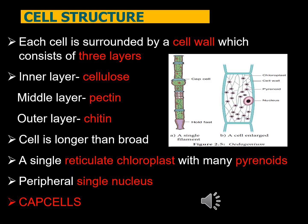Cell structure of Oedogonium. The cell is surrounded by a three-layered cell wall. The inner layer is made up of cellulose, the middle is made up of pectin, and the outer is made up of chitin.